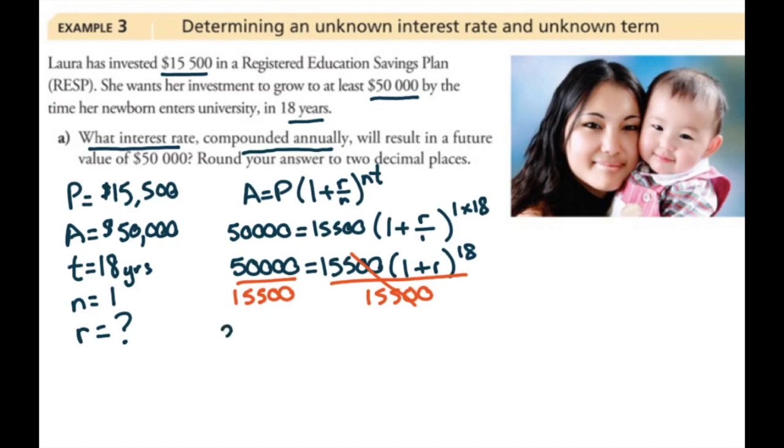On the left we will get 3.225806452, which equals 1 plus r to the power of 18.